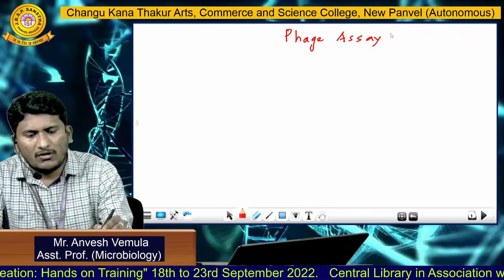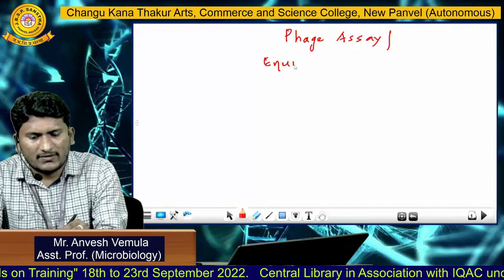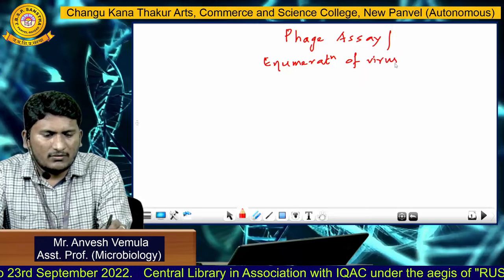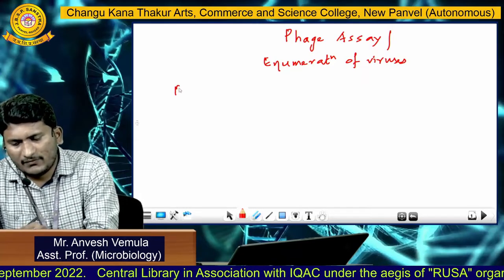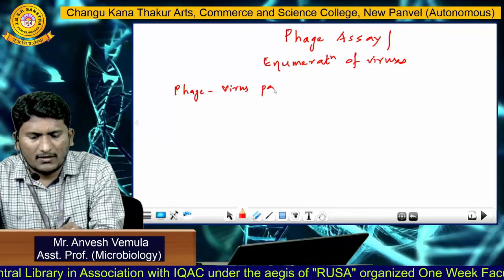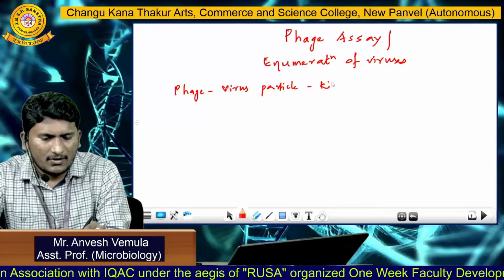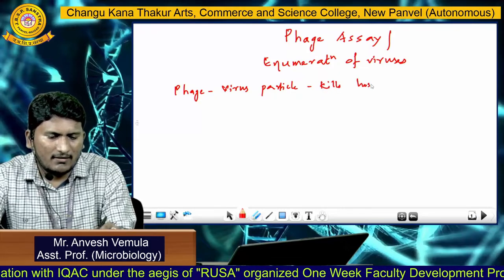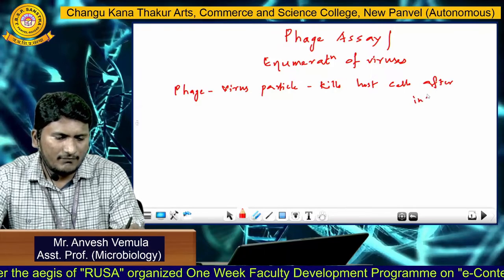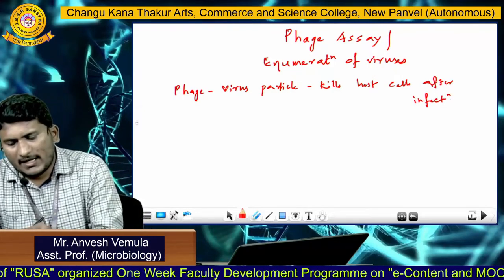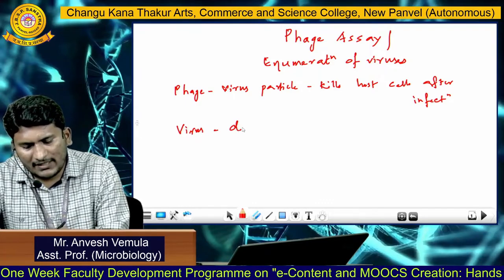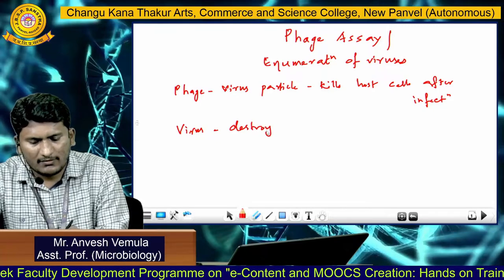Phage Assay is also called as Enumeration of Viruses. When you say a Phage, a phage is a virus particle that kills host cells after infection — that's why it is called as Phage. When you say virus, a virus will not destroy the host cells.